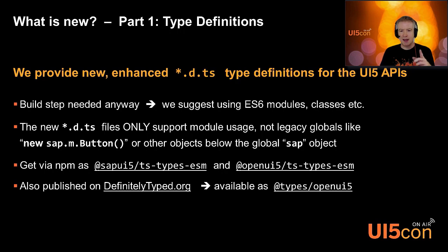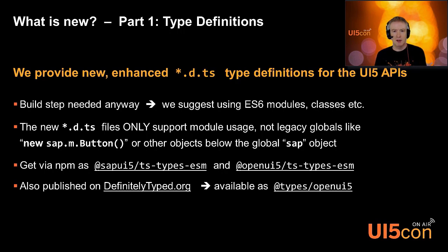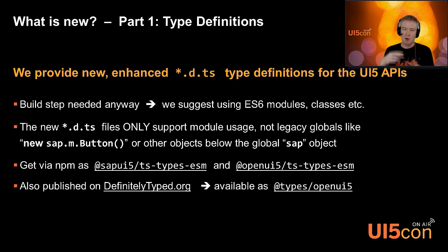What does ESM mean? It means ES modules. We thought: when you anyway have a compilation step, wouldn't it be good to allow developers to use modern JavaScript with ES module loading, ECMAScript class definitions, and so on? This is exactly what we suggest. You should write modern JavaScript, and therefore we no longer support the discouraged globals like writing SAP.m.Button — instead use modern JavaScript. We will provide a way to translate this to the traditional UI5 APIs.